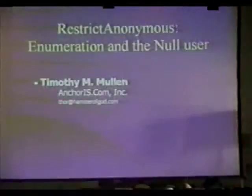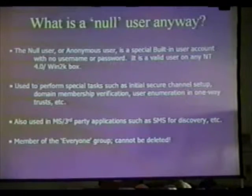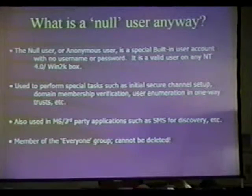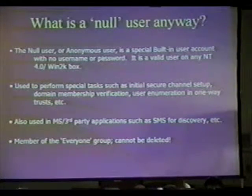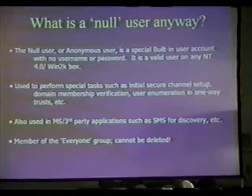I'm Tim Mullen, and we're going to be talking about restrict anonymous enumeration in the null user. The first question that comes up is: what is a null user? Why do we need one? Why do we have one? Why is NT set up to accept one?